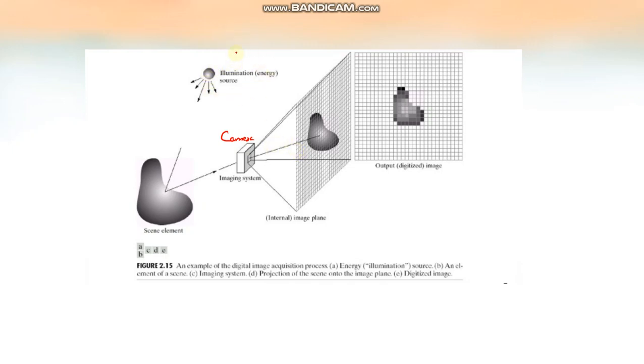We have an illumination source, sun or any light sources. Now suppose we have an image plane. It is an imaginary plane where this image is placed, so it has an x value and y value.